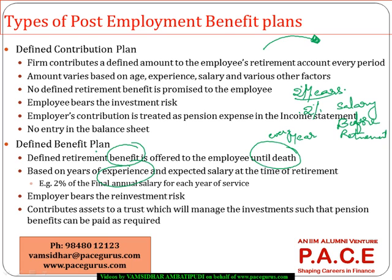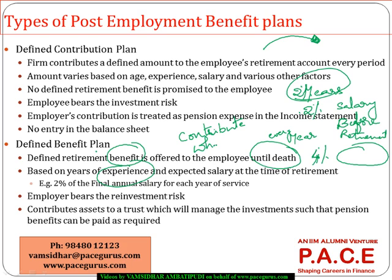So if you have put two years of service, the pension you would receive is four percent of your final salary — whatever your final annual salary before retirement, four percent of that will be paid to you every year until your death. That is what is typically worked out as part of the defined benefit pension plan. The employer is focused on the output — paying this much pension every year until the employee is alive — so the investment risk is primarily borne by the employer.